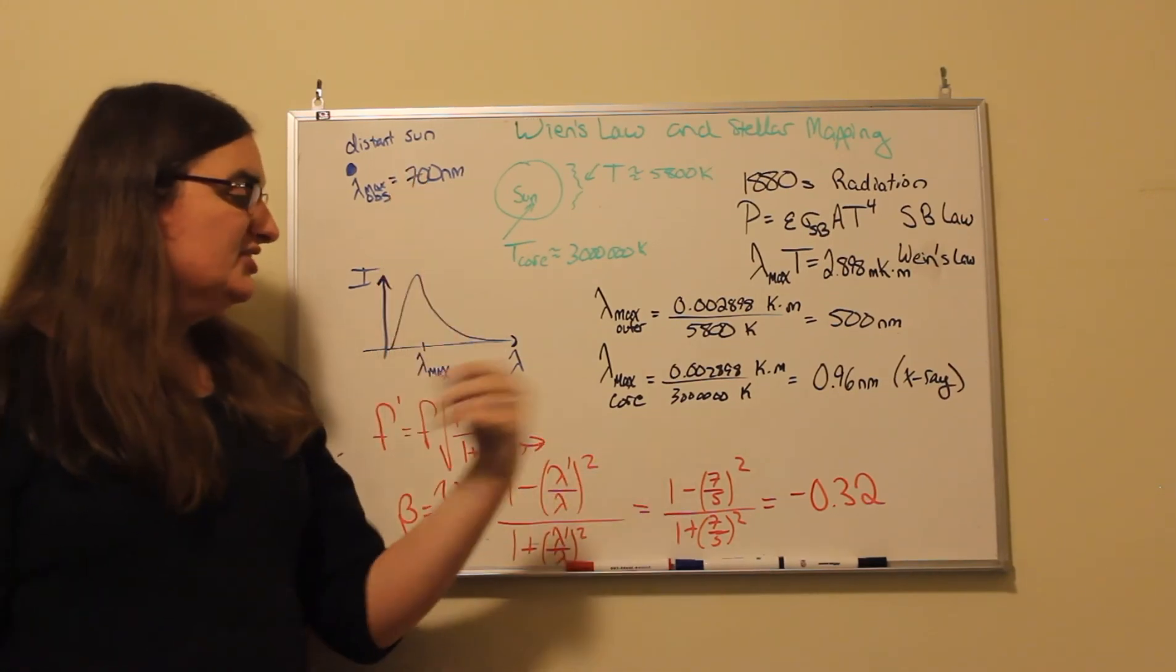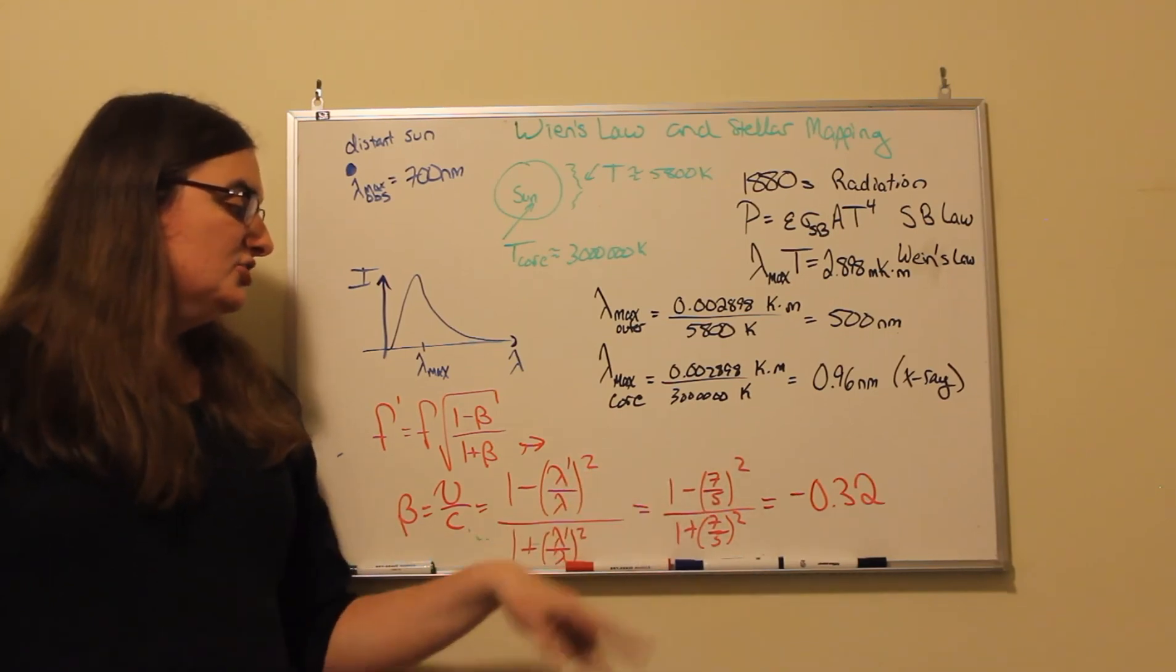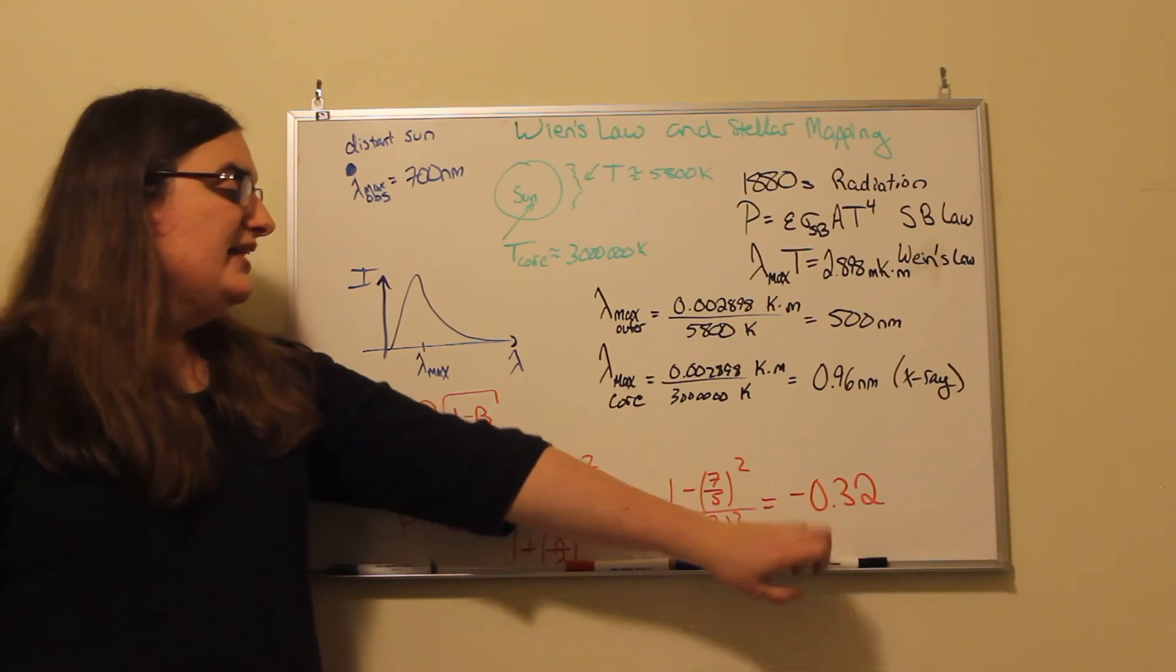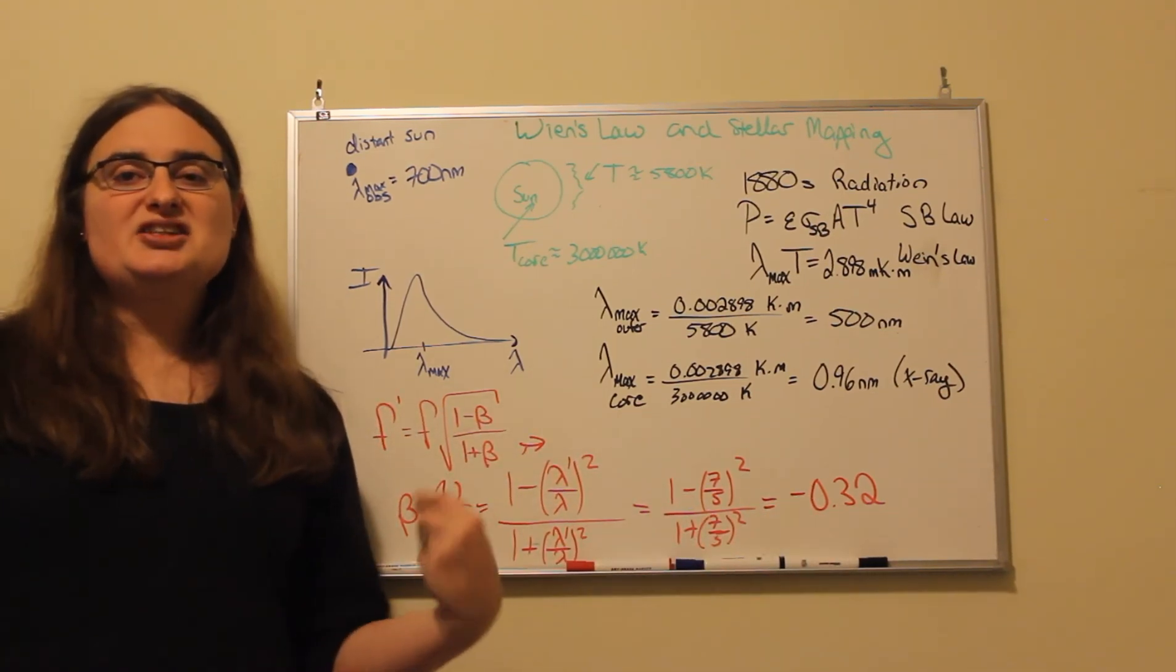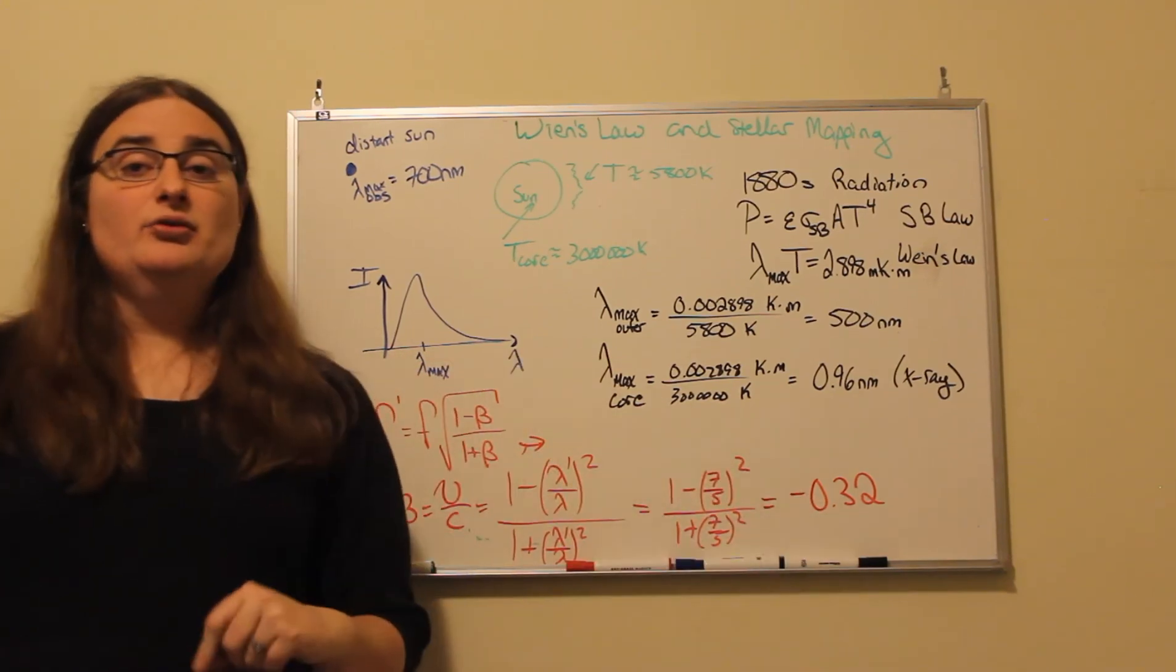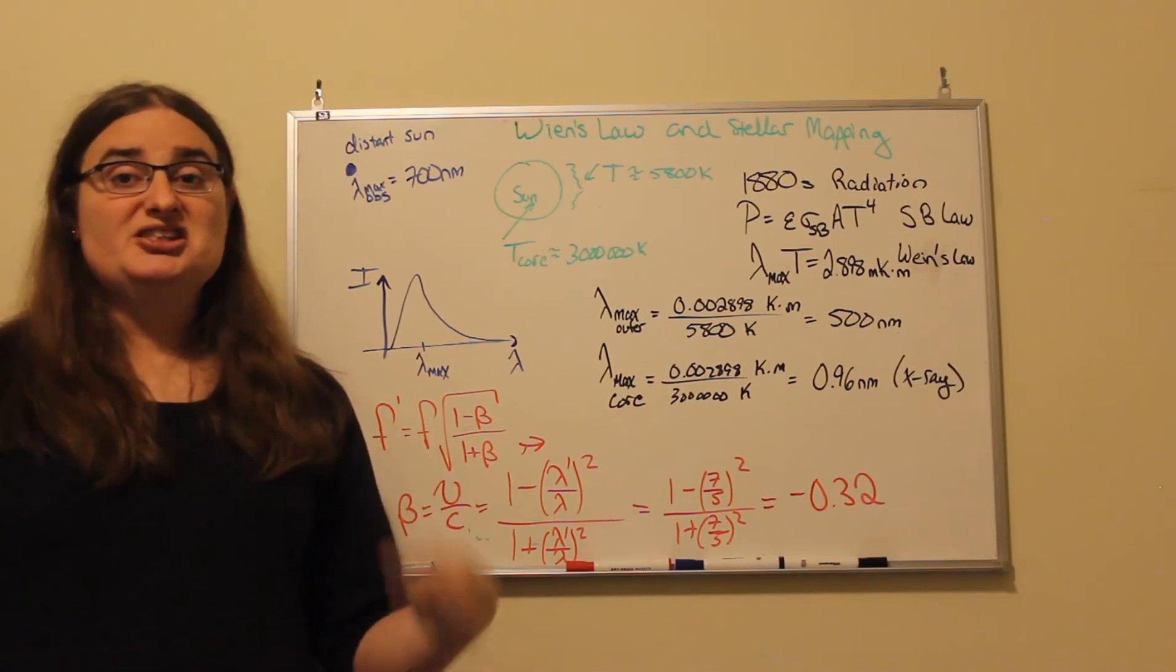So our ratio of wavelengths is 7 fifths. So 1 minus 7 fifths squared divided by 1 plus 7 fifths squared gives me negative 0.32. So that means that star would have to be moving away from us with a velocity of 0.32 times the speed of light.